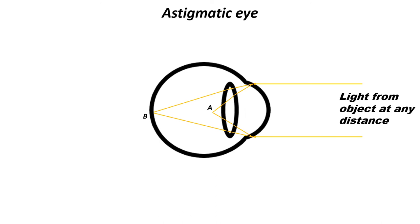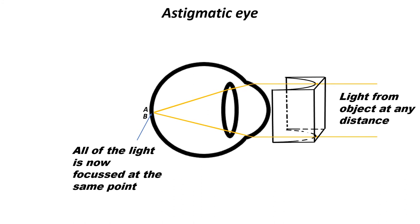So going back to the astigmatic eye, when a cylinder lens is placed in front of the eye and lined up correctly, it will correct one part, in this case the steeper part, but leave the other, in this case the flatter part, uncorrected or unaffected, sorry.